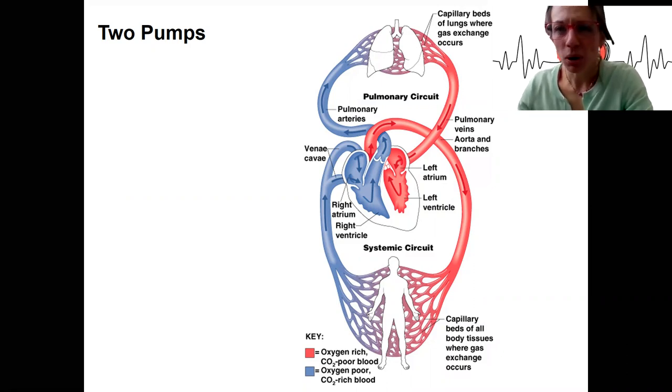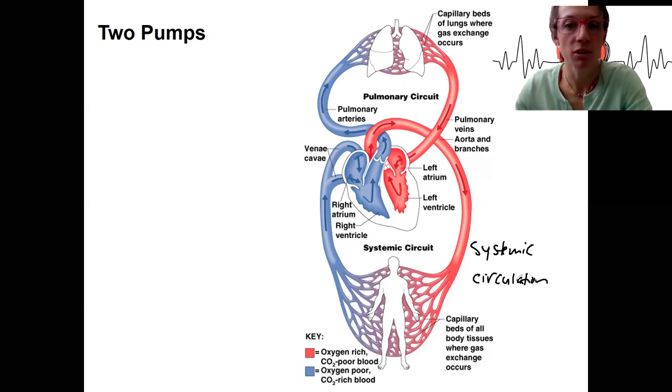We've got two pumps, right? The circulatory system is made up of the heart with two sets of pumps. This is our systemic circulation over here, and this needs a pretty good pump to force blood through this entire system, the entire body, up to your head going against gravity.